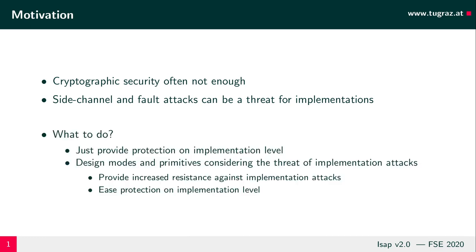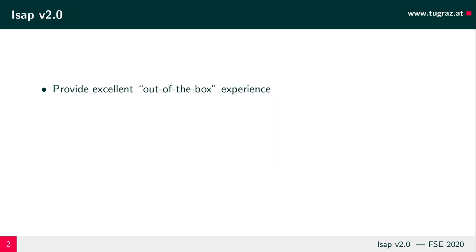So what do we do now? One approach is to consider it as a problem of the implementation and provide protection solely on the implementation level. An alternative is to design modes and primitives considering the threat of implementation attacks. Such modes can provide increased resistance against implementation attacks, while carefully designed primitives can ease the protection on the implementation level. Our goal when designing ISAP V2.0 was to provide an excellent out-of-the-box experience for engineers who implement ISAP V2.0 with the goal of hardening their devices against implementation attacks.